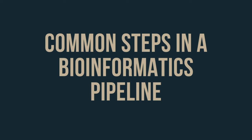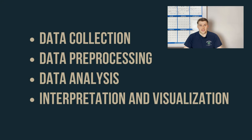Now that we understand what a bioinformatics pipeline is and why it's used, let's dive into the typical steps you might find in one of these pipelines. We'll be using a genomic sequencing pipeline as our guiding example. The steps used in these pipelines can vary depending on the type of data and the goals of your project, but usually we start with data collection. In a genomic sequencing pipeline, this data usually comes from a sequencing machine and consists of short DNA sequences, often referred to as reads.